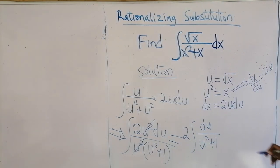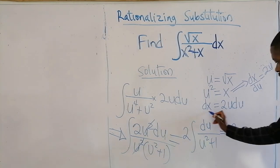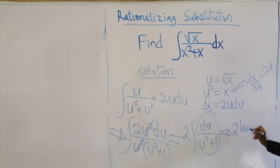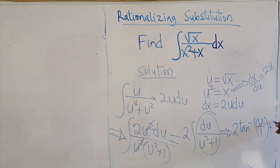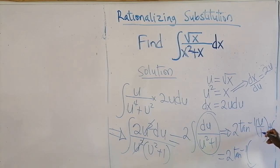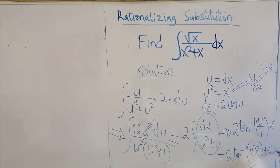From the standard table, the integral of 1 over (u squared plus 1) is arctan(u). So we get 2 arctan(u) plus C. Substituting u back in terms of x gives the final answer: 2 arctan of the original radical expression, plus C. That finishes this question.